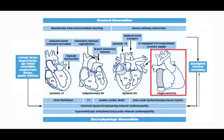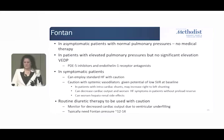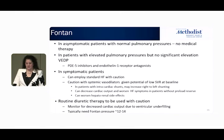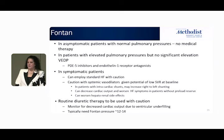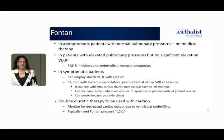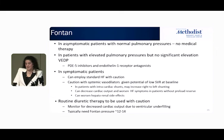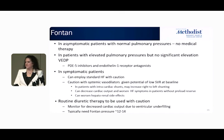Now switching to the last group — our single ventricle Fontan patients, a group that is probably increasing most in percentage reaching adulthood due to great surgical improvements in hypoplastic left heart syndrome. In asymptomatic Fontan patients with normal pressures, there's really no data for using medical therapy. If patients have elevated pulmonary pressures or symptoms of exercise incapacity without substantially elevated ventricular diastolic pressure, pulmonary vasodilator therapies are very reasonable and often well tolerated. In symptomatic patients, standard heart failure therapies can be employed, but this really needs to be co-managed with an adult congenital specialist, given the cautions and risks of making some of these patients worse.